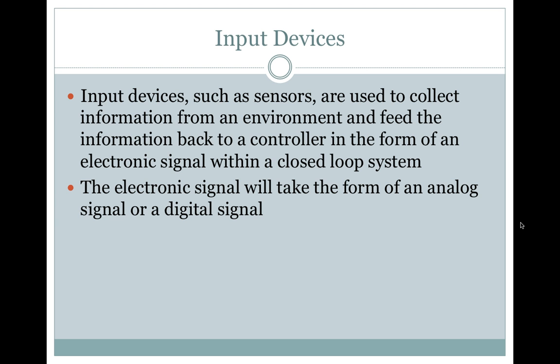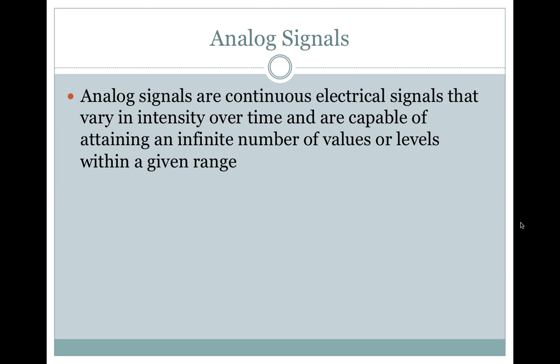The electronic signal will take the form of an analog signal or digital signal. Analog signals are continuous electrical signals that vary in intensity over time and are capable of attaining an infinite number of values or levels within a given range.